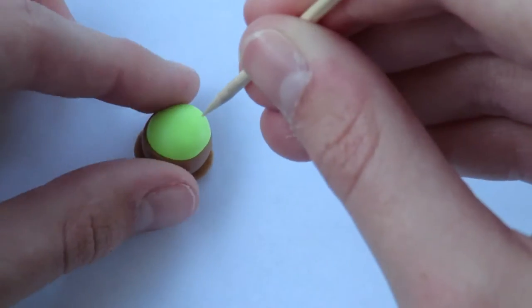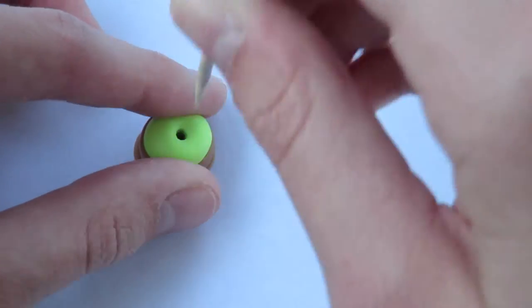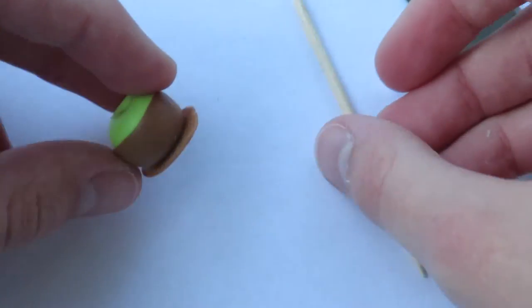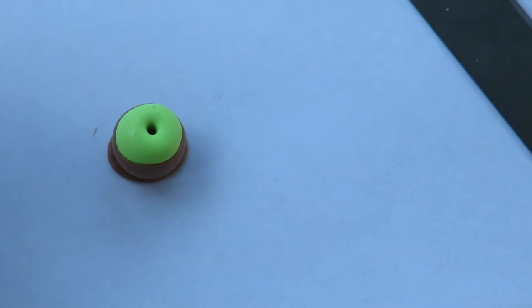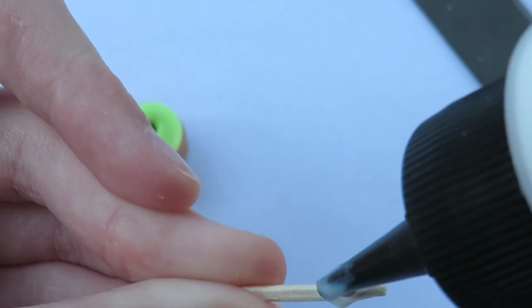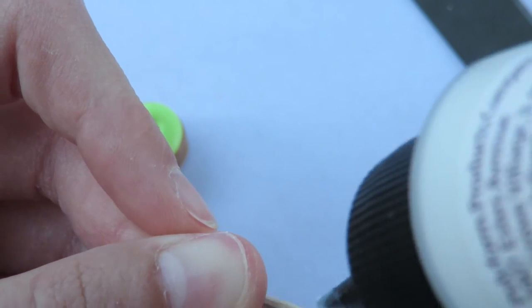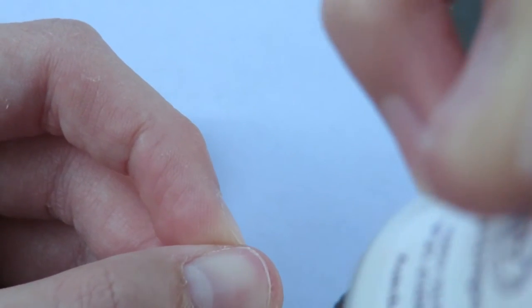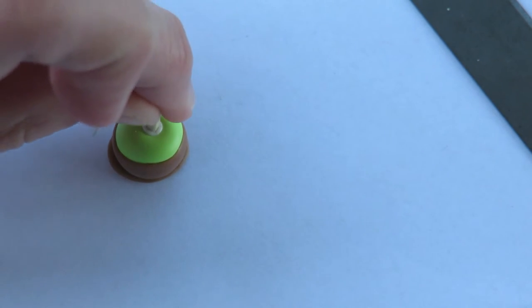Then I took the toothpick and just marked where I was going to put it, and this helps for when you put it in with TLS so that TLS doesn't really pull around the toothpick at the top. Then I cut it to the size I needed and added TLS so it would stay in the apple. And then I just stuck it back in the hole.